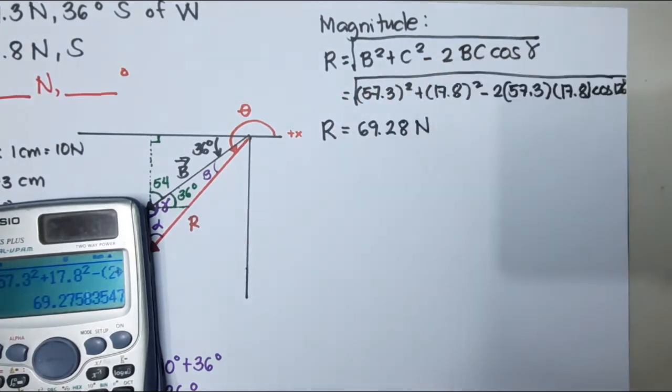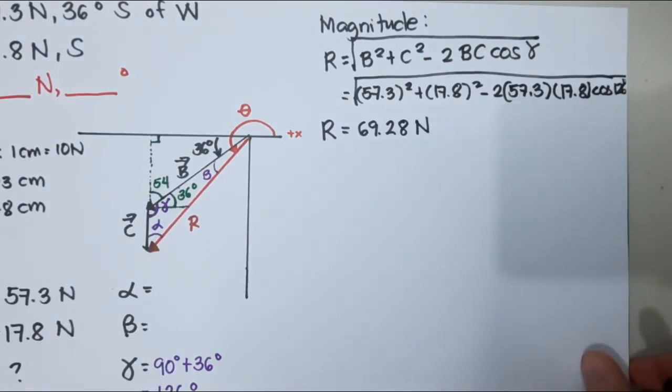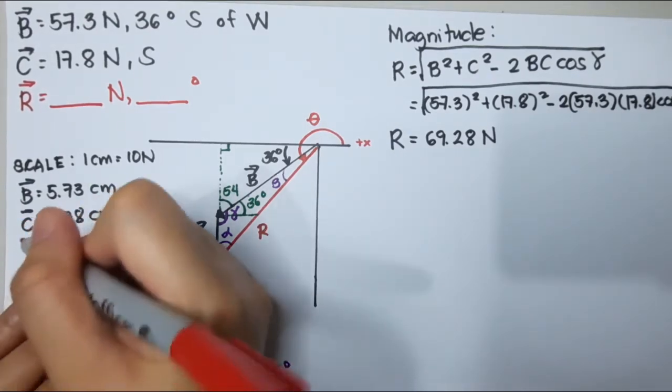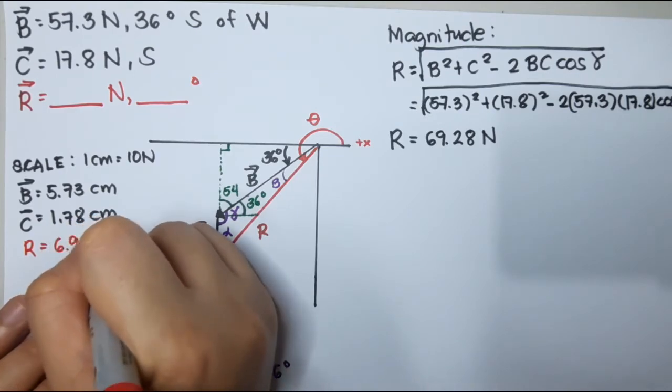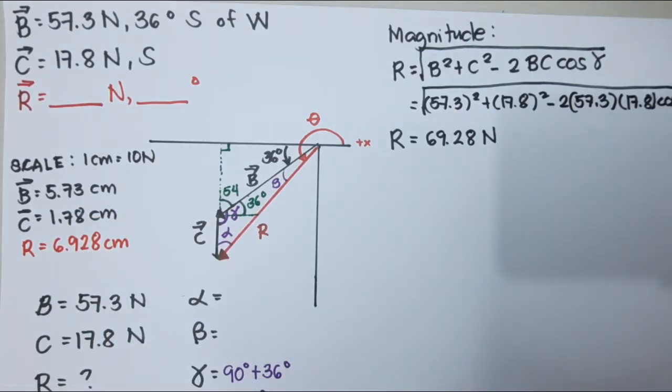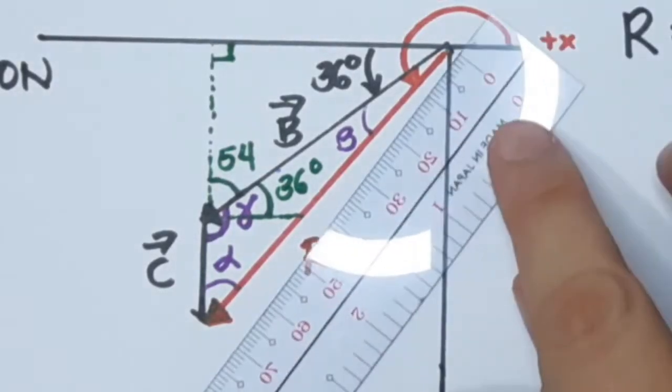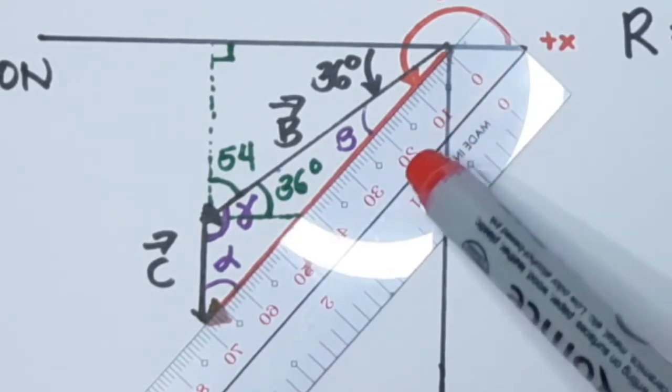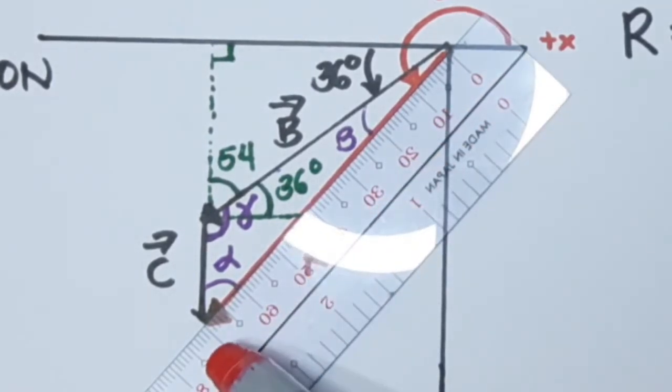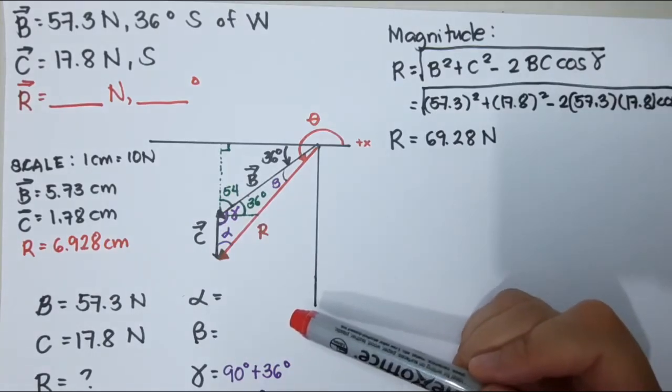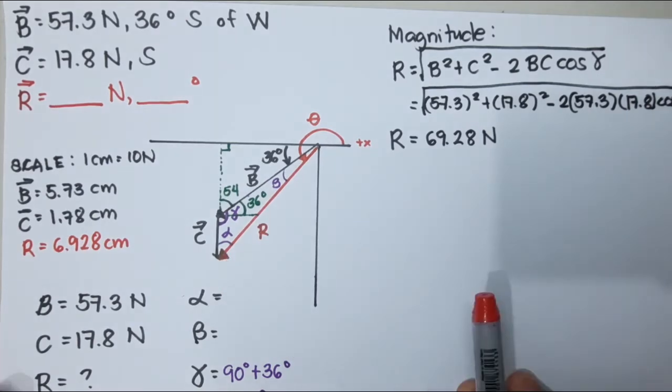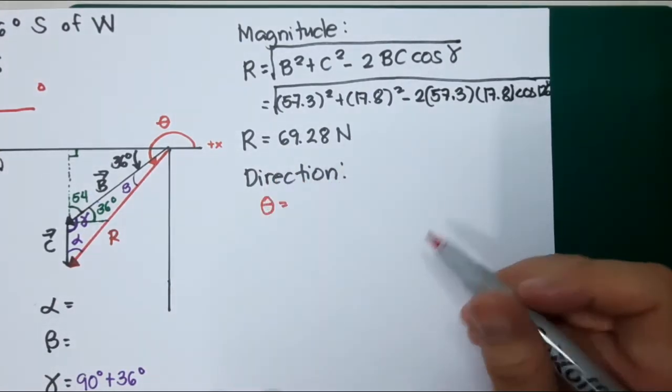If I will substitute, the answer of that, R is 69.28 Newton. Let's check again for our answer using our graphical method. If that 69.28 Newton, R would be 6.928 cm or roughly 7. If you will look on my ruler, that is 0, 10, 20, 30, 40, 50, 60, 70 cm. I assume my answer is correct because my ruler measured this as 7 cm, so that is almost 70 Newton.